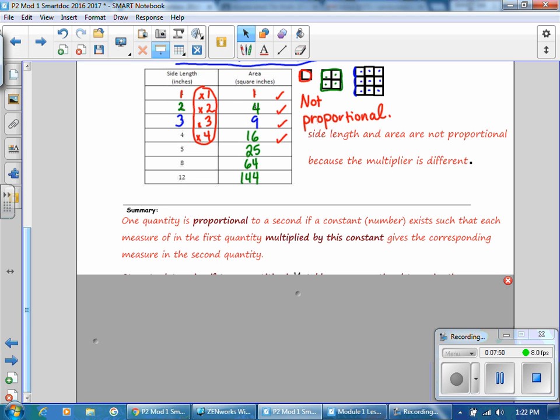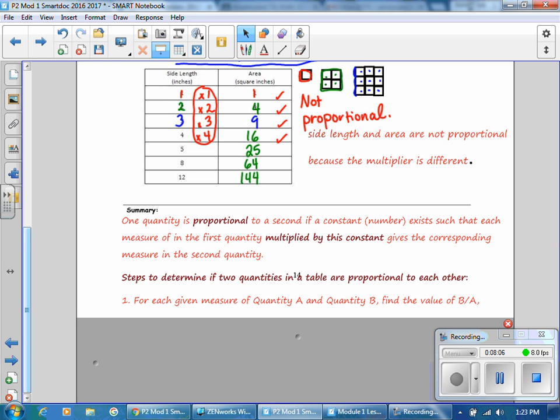In summary, one quantity is proportional to a second if a constant number exists such that each measure in the first quantity is multiplied by this constant, giving the corresponding measure in the second quantity.